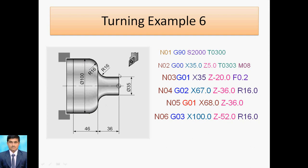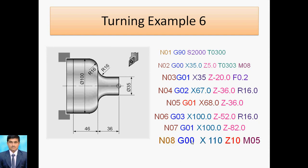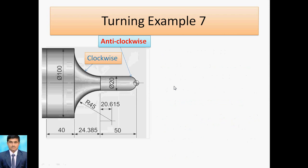To complete: Z minus 52 covers Z36 plus 16. Then the tool is at X100 and the next block has Z minus 82 (addition of both values). Last block: X110 (offset from 100) and Z10 positive. Then M05 spindle stop and program end. This is the turning operation for example six.